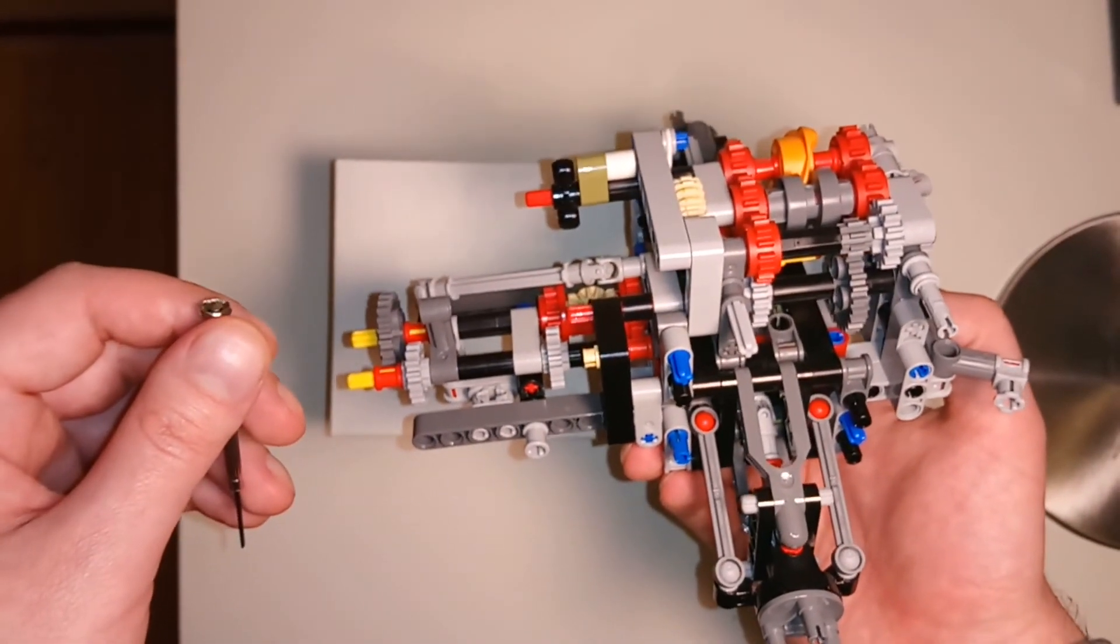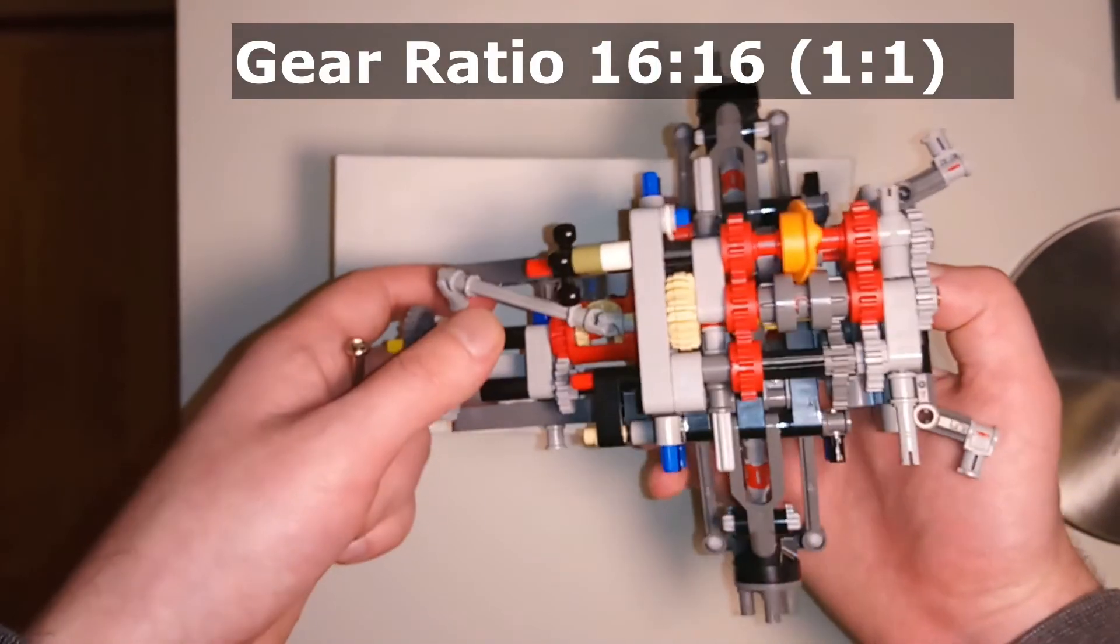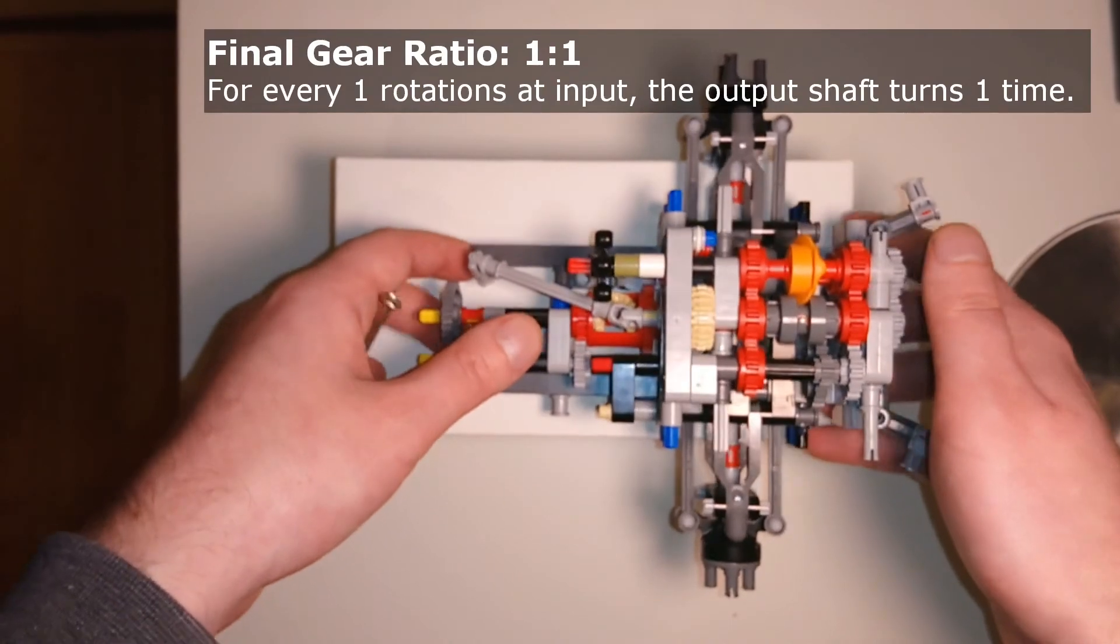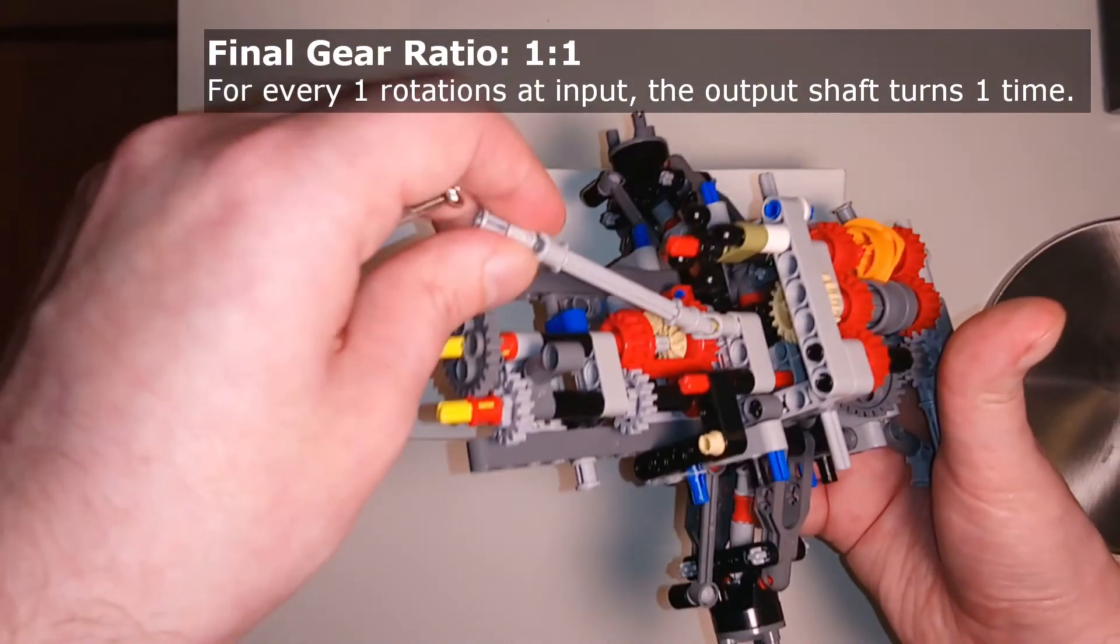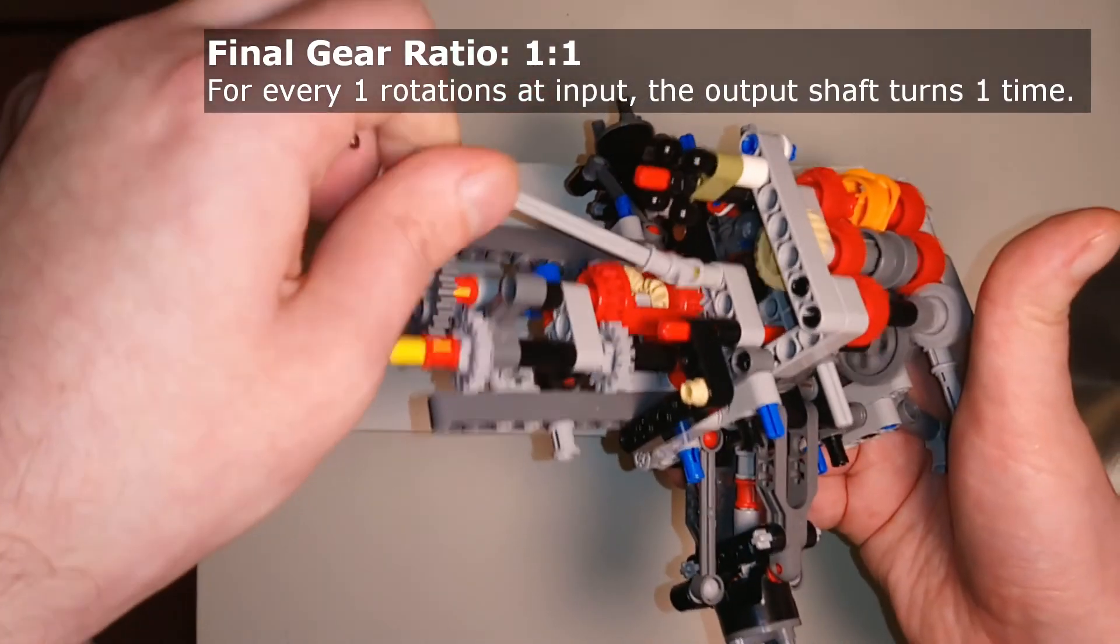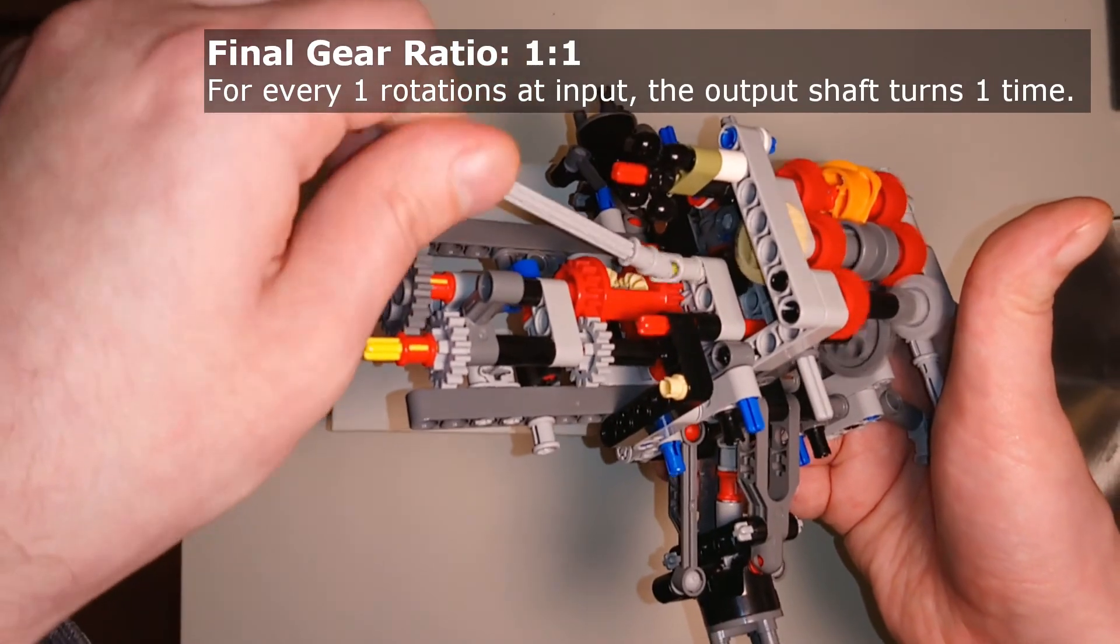All the gear wheels in this path have a 1 to 1 gear ratio in relation to each other. As a result, the input shaft rotates just as fast as the output shaft.